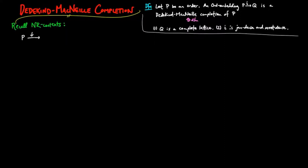By the thin Yoneda lemma, P embeds in the down-closed subsets of P, and also the opposite of the up-closed subsets of P. Since the opposite of the up-closed subsets is co-complete, the up-segment functor is a nerve-realization context, inducing a nerve-realization adjunction. Note that the down-segment functor is join dense and the up-segment functor is meet dense.